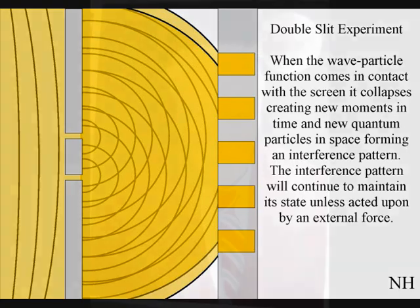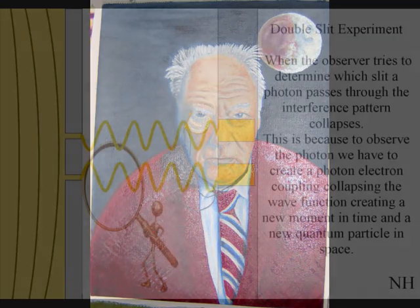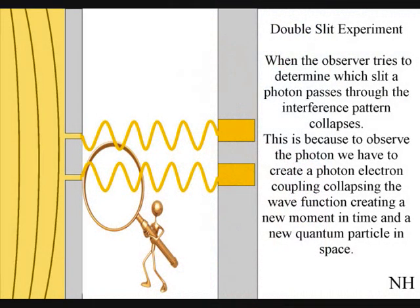When the observer turns on a detector to determine which slit a photon passes through, the interference pattern collapses. At that moment in time, the interference pattern disappears, because to observe the photon, we have to create a photon-electron coupling, collapsing each wavefront into a new quantum particle that will have its own position in space and time.